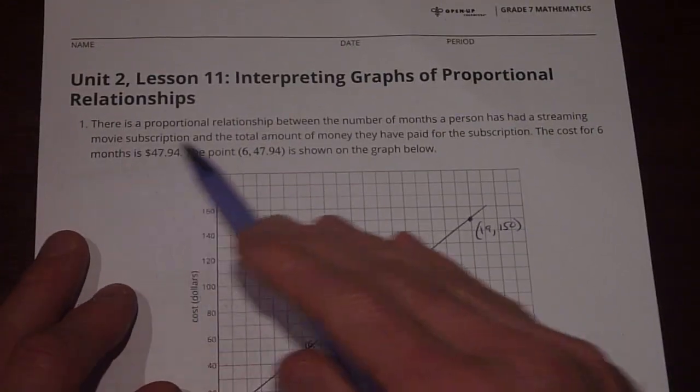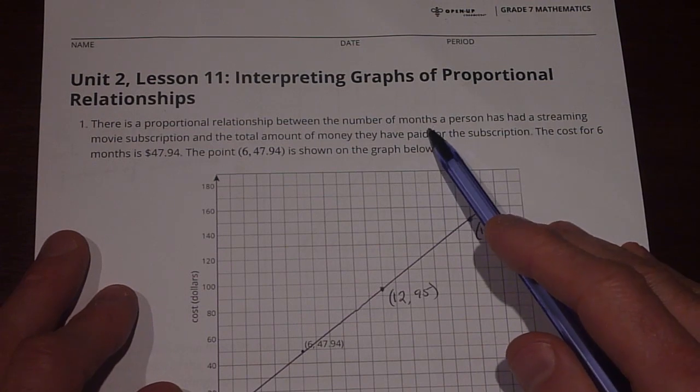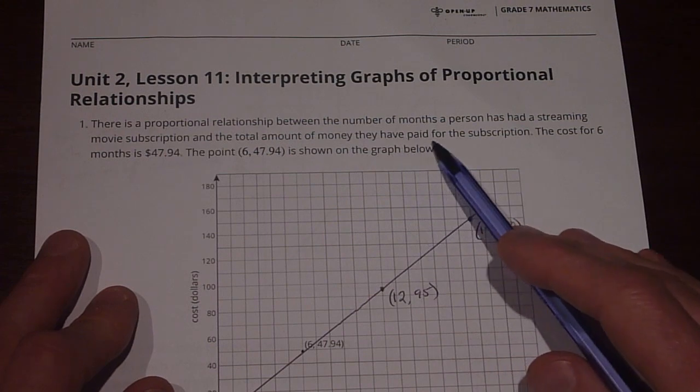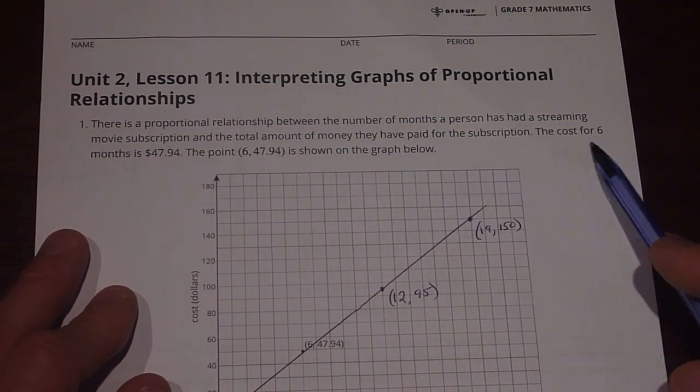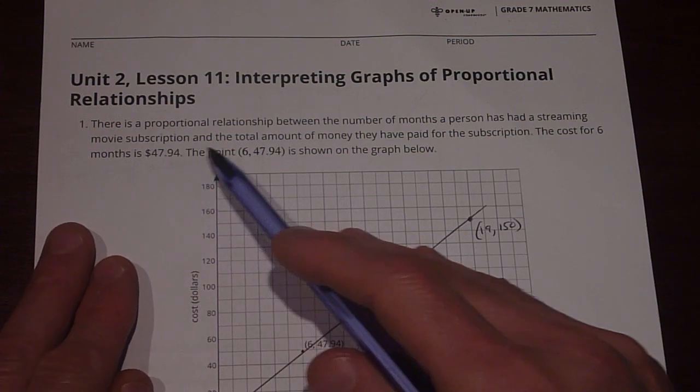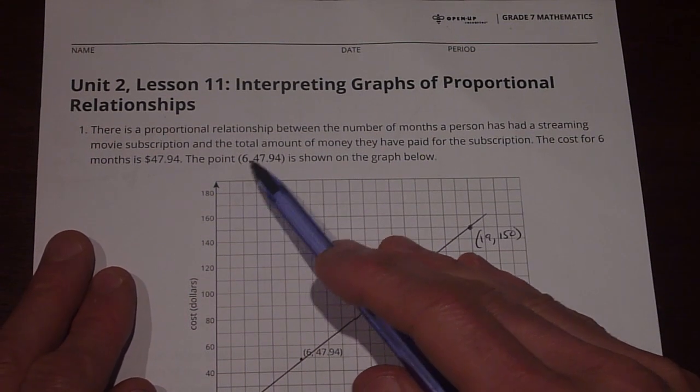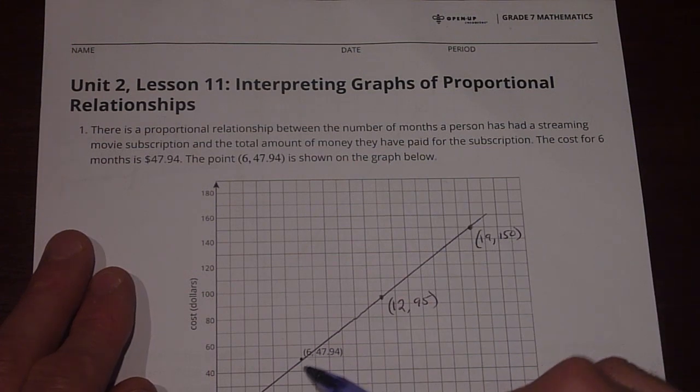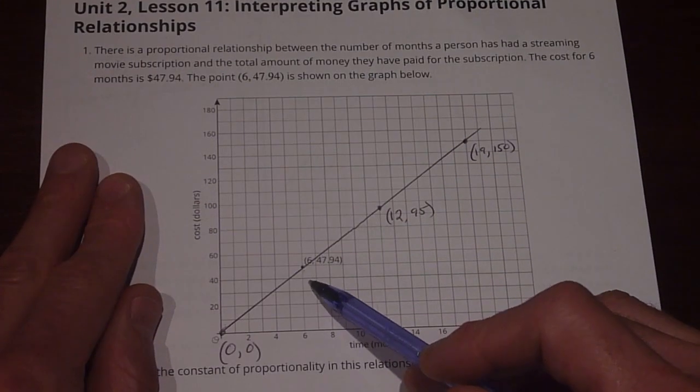First, there's a proportional relationship between the number of months a person has had a streaming movie subscription and the total amount of money they have paid for the subscription. The cost for 6 months is $47.94. The point 6 comma 47.94 is shown on the graph below, right here on the graph.